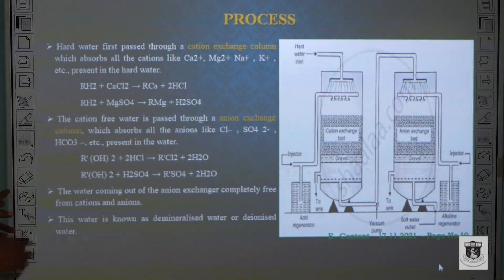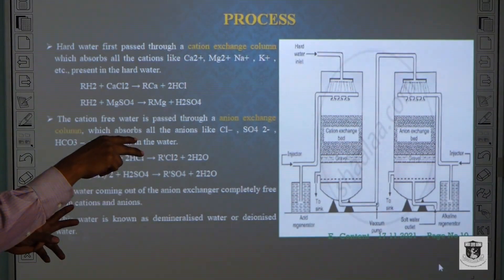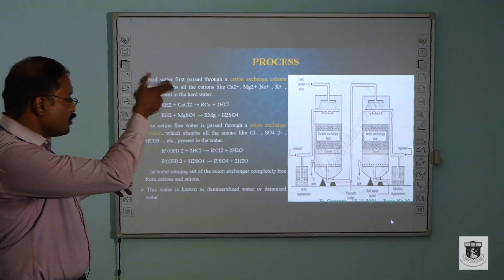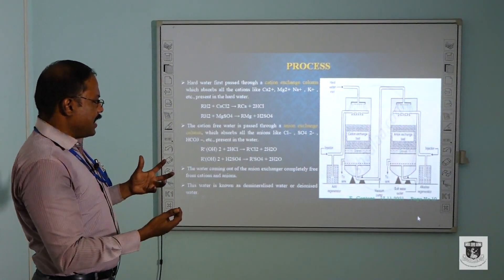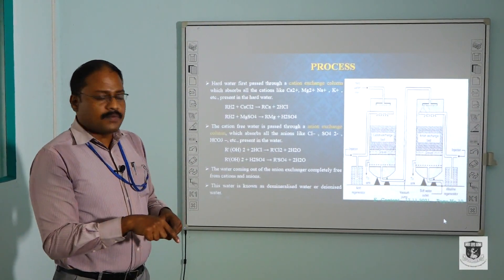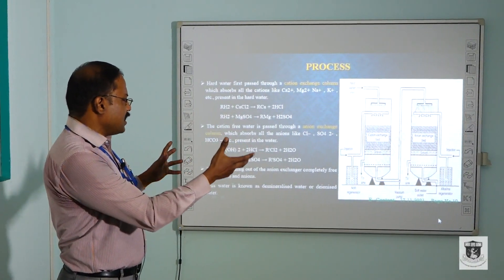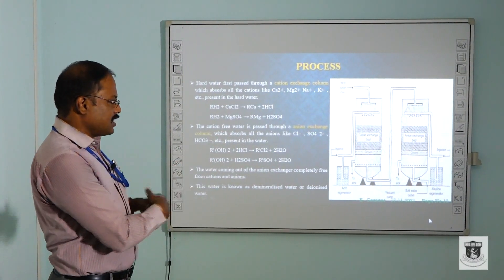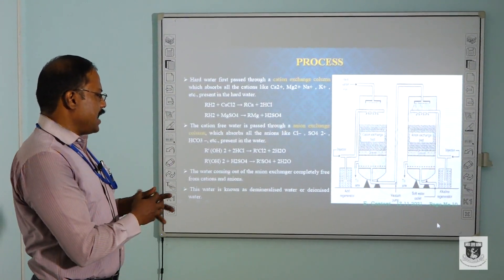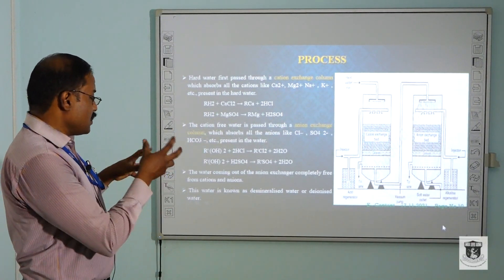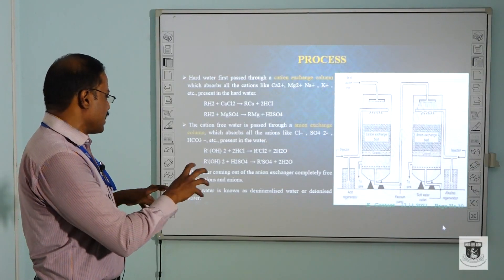After passing through the cation exchange bed, the cation-free water is passed through an anion exchange column, which absorbs all the anions like chlorides, sulphates, and whatever else is present from the hard water, converting them to RCl₂ on the resin and releasing water molecules in the purest form. Ultimately, the water coming out of the anion exchanger is completely free from cations and anions. This water is known as demineralized water or deionized water.